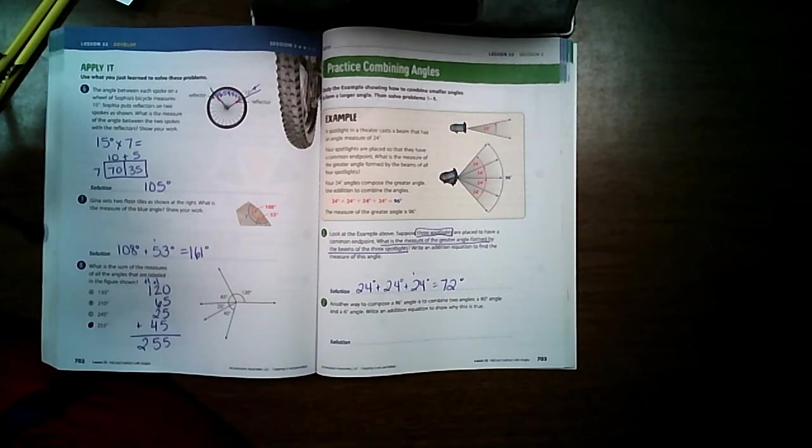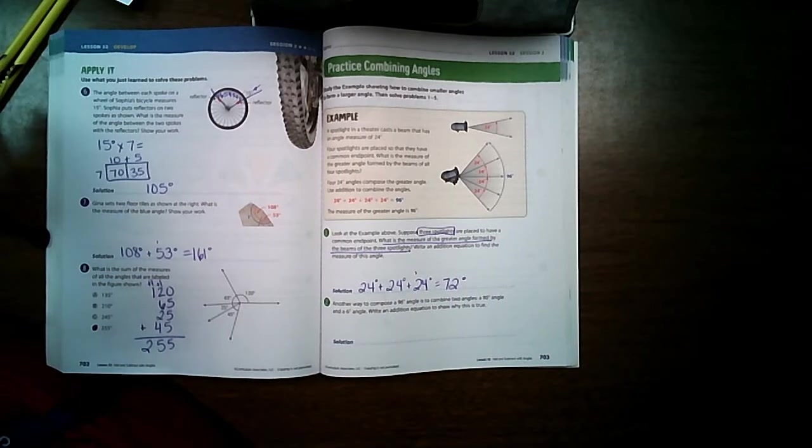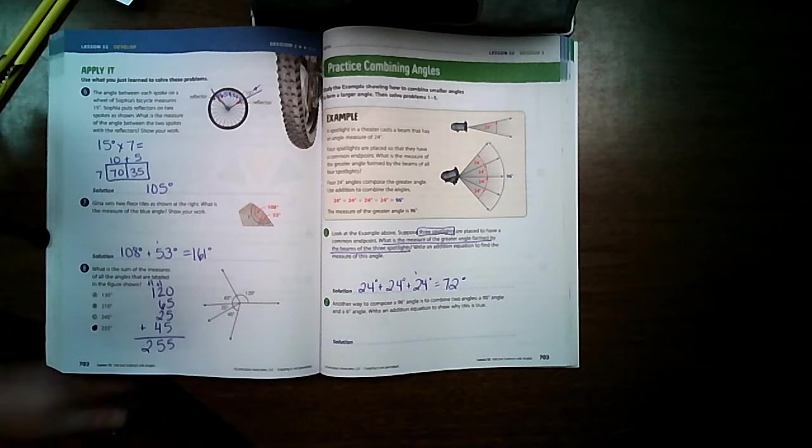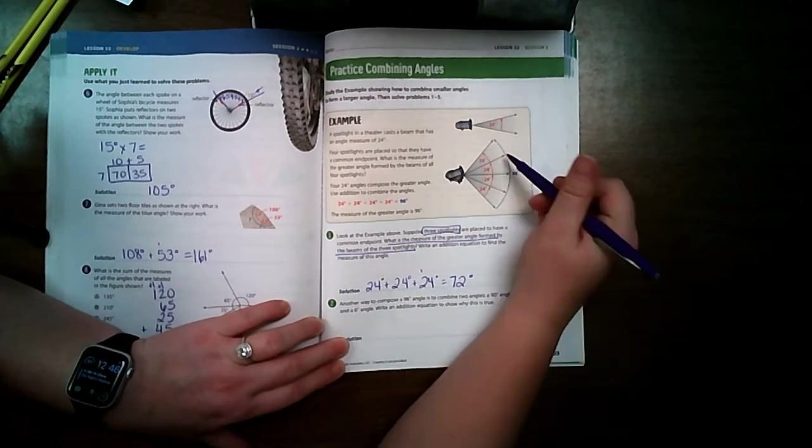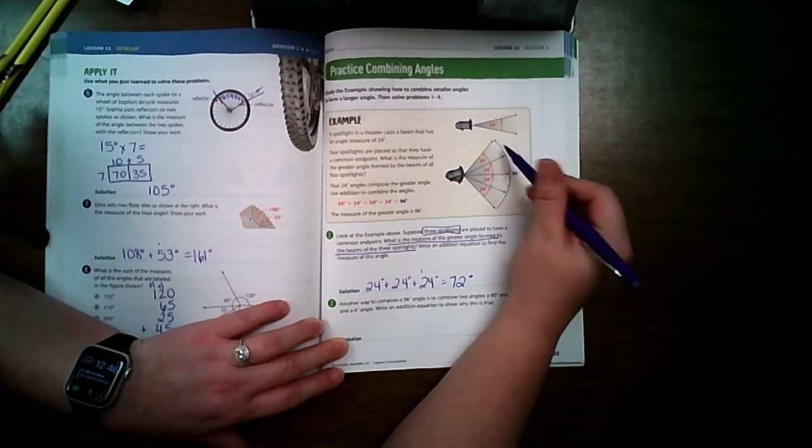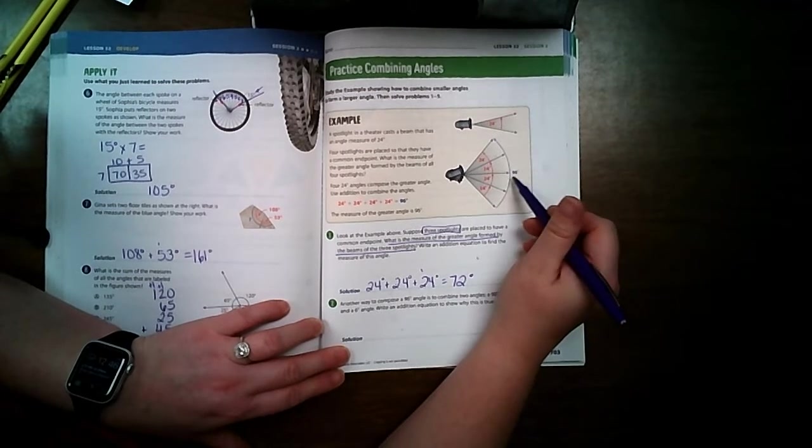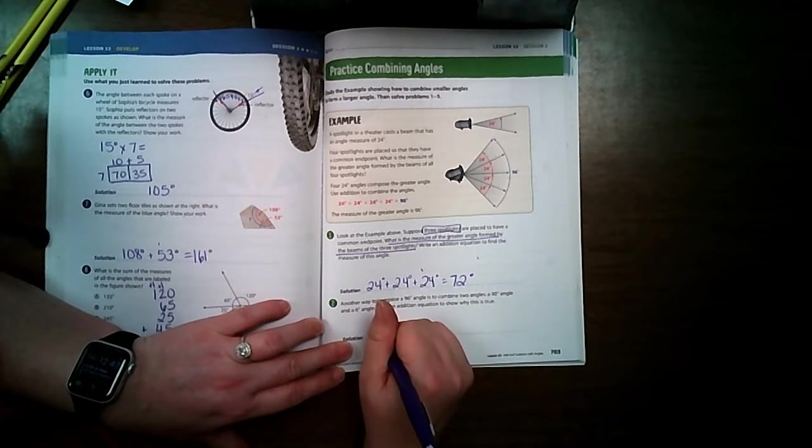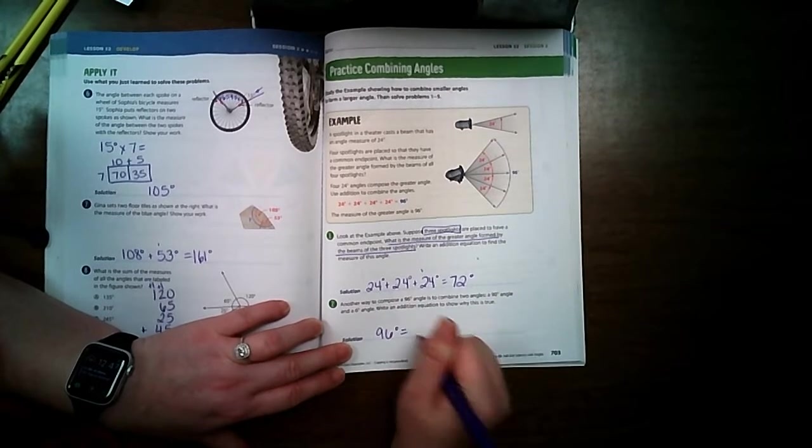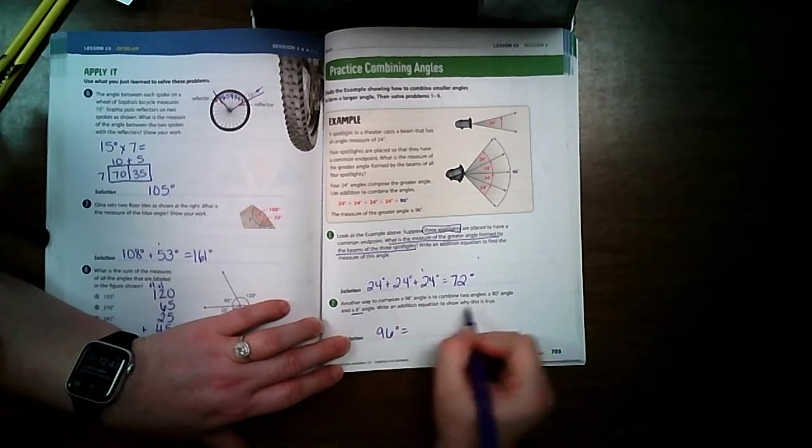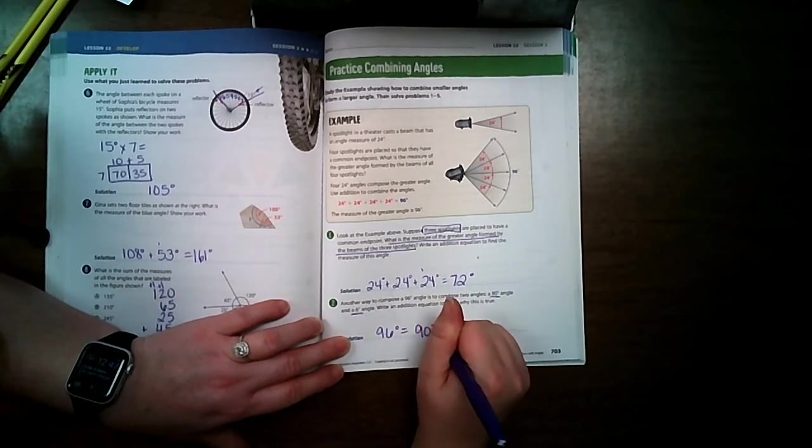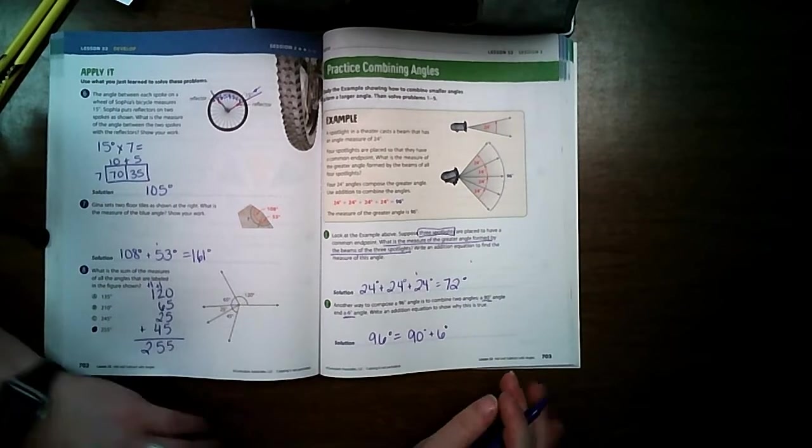Another way to compose a 96 degree angle is to combine two angles: a 90 degree angle and a 6 degree angle. Write an addition equation to show why this is true. So up here it showed 24 plus 24 plus 24. They had four spotlights up here. We had three spotlights right here. But now down here they're wanting to know what's another way to do this. So if we want 96 degrees, another way we could do it is by 6 degrees and 90 degrees. So we could do 90 degrees plus 6 degrees equals 96 degrees.